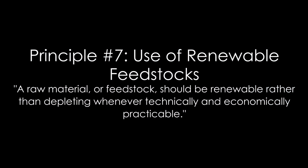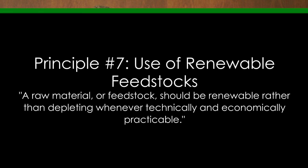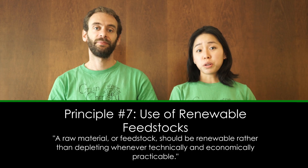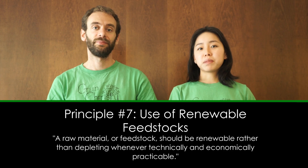This principle states that a feedstock or raw material should be renewable rather than depletable whenever technically or economically practicable. A raw material is similar to an ingredient — it is a basic substance in a starting or semi-processed state and not yet the final product. So if we consider a cookie as an example of the final product, then one of its feedstocks will be sugar.